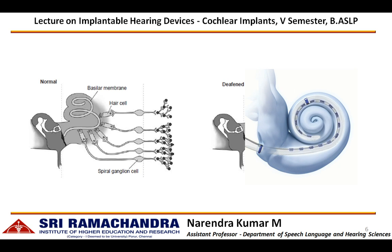The cochlear implant has an intracochlear electrode array which is surgically placed within the cochlea. It has various electrode contact points that lie along the length of the cochlea. These electrode contacts have specific frequencies tuned to them, so the apical electrode contact regions fire for low frequency signals and the basal electrode contact regions fire for high frequency signals.